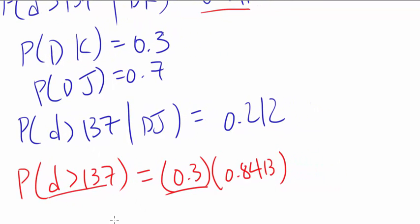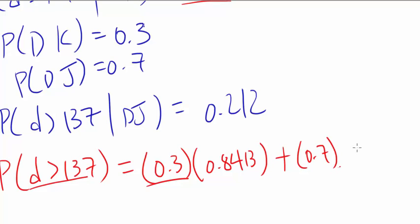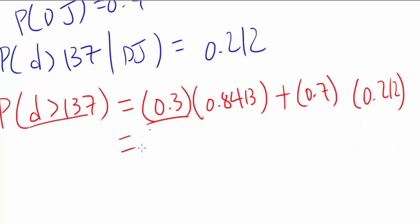How about it being more than 137 and it being from distributor J? Same thing. You gotta pick the one from distributor J and the diameter has to be more than 137 given that it's distributor J.